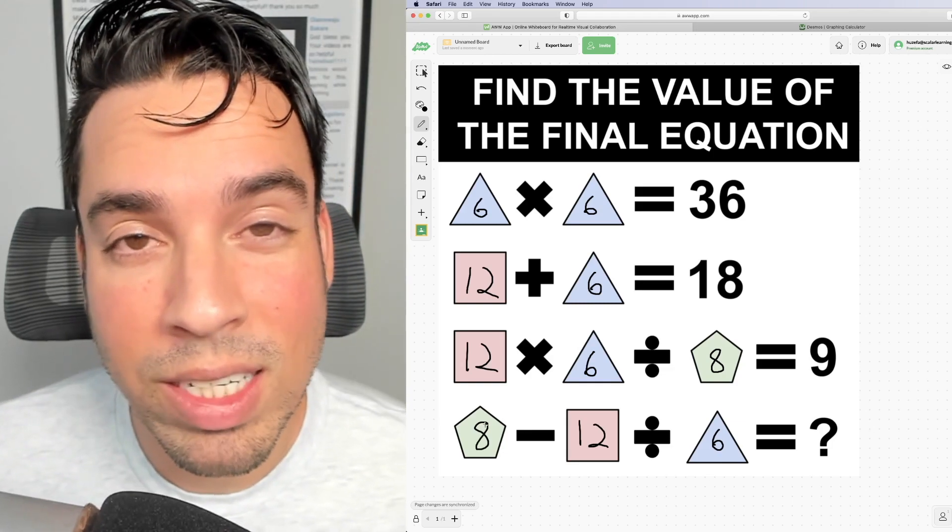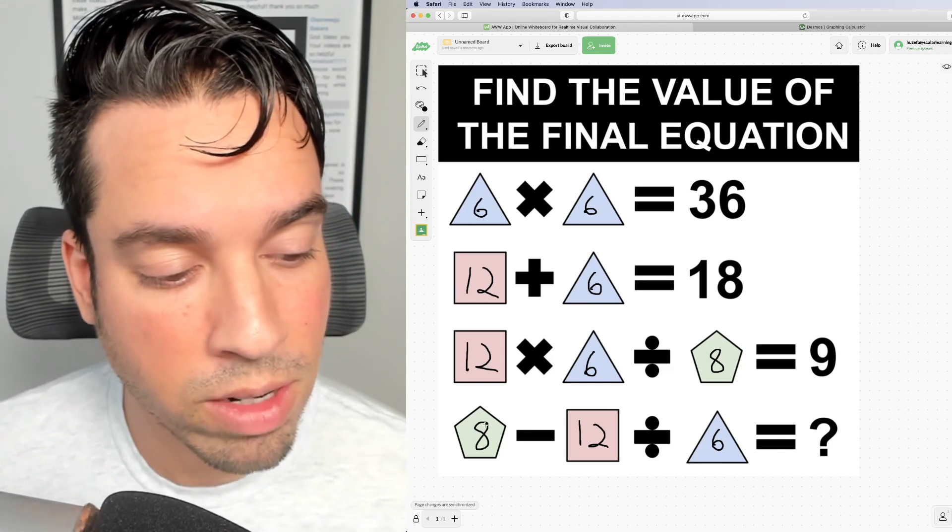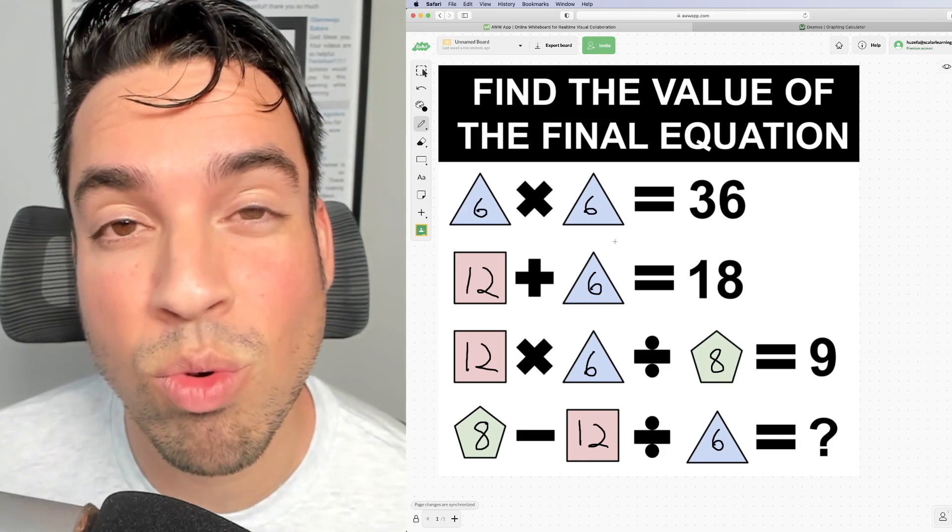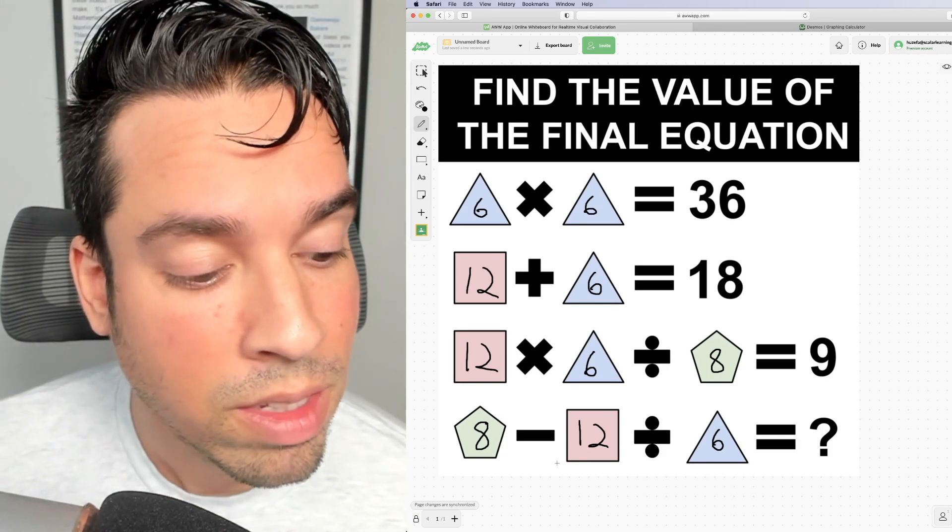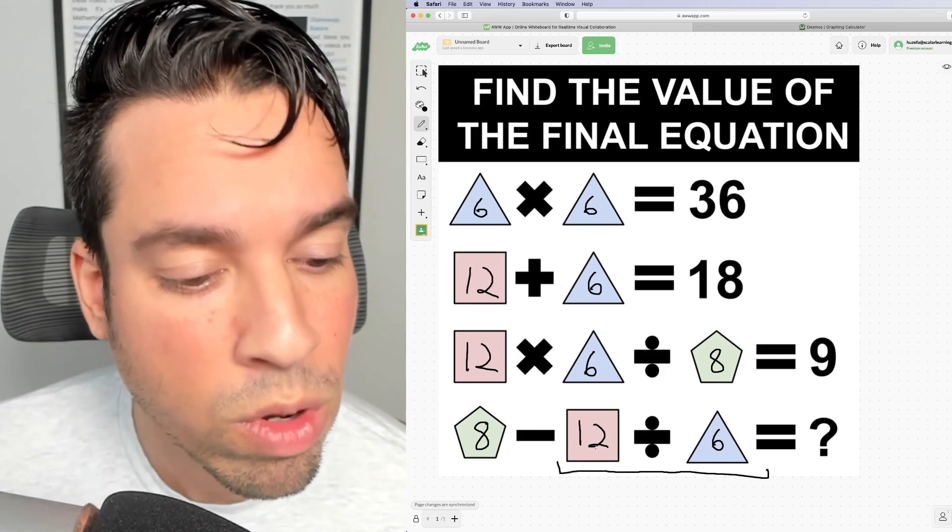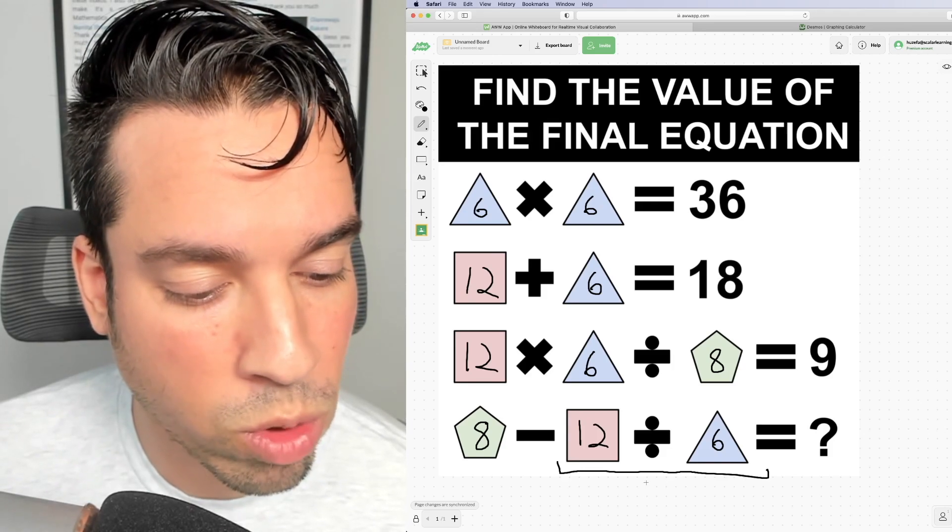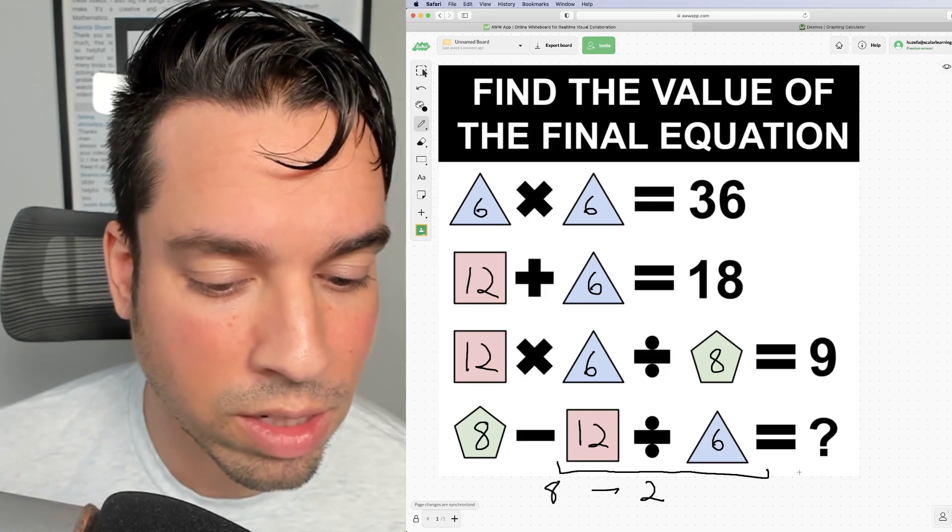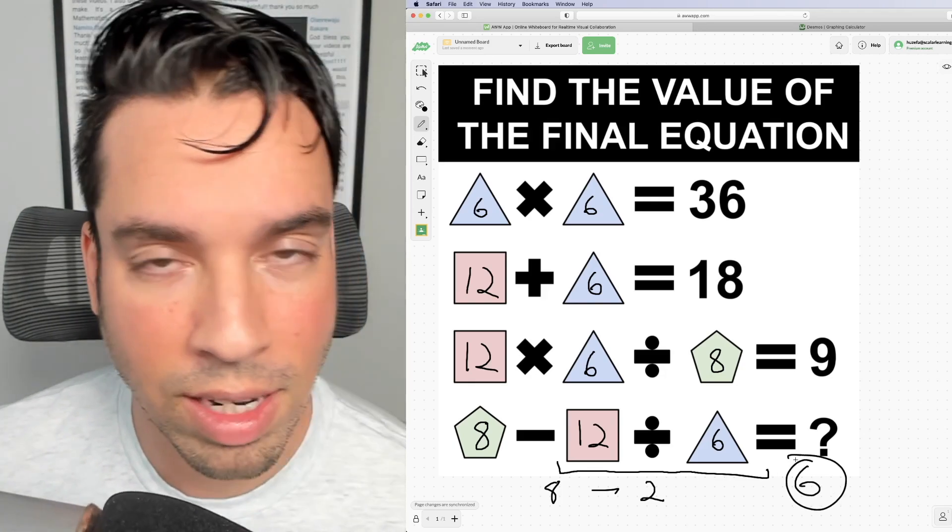And now we've got all the values that we need in order to solve this final equation. The last thing we got to bear in mind is we got to proceed according to order of operations, meaning this division must happen before the subtraction. So first we do 12 divided by 6, which of course is 2. And then we finish it off with the 8 minus 2, and we get a final answer of 6.